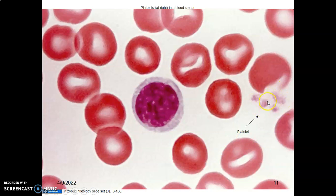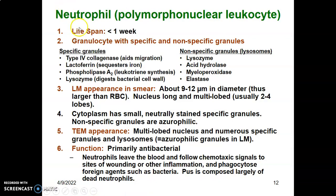Moving to white blood cells — neutrophils, also called polymorphonuclear leukocytes, have a lifespan of less than one week. Neutrophils are granulocytes, so they have granules in the cytoplasm — two types: specific and non-specific. Specific granules contain type 4 collagenase (which aids in migration), lactoferrin (which sequesters iron), phospholipase A2 (which helps in leukotriene synthesis), and lysozyme (which digests bacterial cell walls).